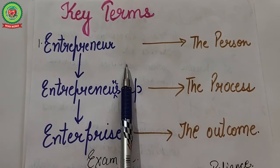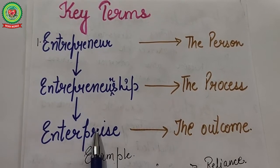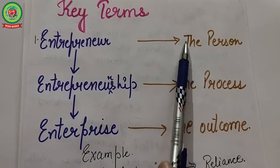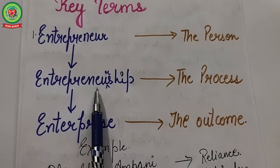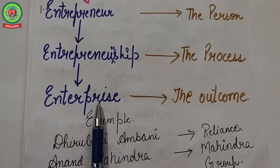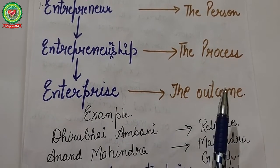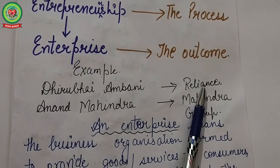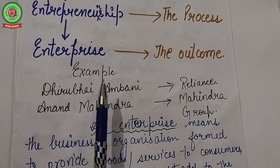Now we will discuss our key terms. First is the interrelationship between entrepreneur, entrepreneurship, and enterprise. The entrepreneur is the person who undertakes an enterprise; entrepreneurship is the process of launching an enterprise; and the enterprise is the outcome in the form of a company or business.